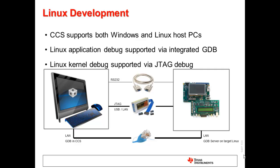Finally, let's take a look at a simplified graphical representation of the typical connections for a complete Linux debug environment that combines both the Linux application and Linux kernel debug environments. Linux application debug is supported using GDB through an Ethernet connection. Linux kernel debug is supported through a JTAG connection through a JTAG emulator. And the serial connection can be used by both, especially for a Linux application debug session.